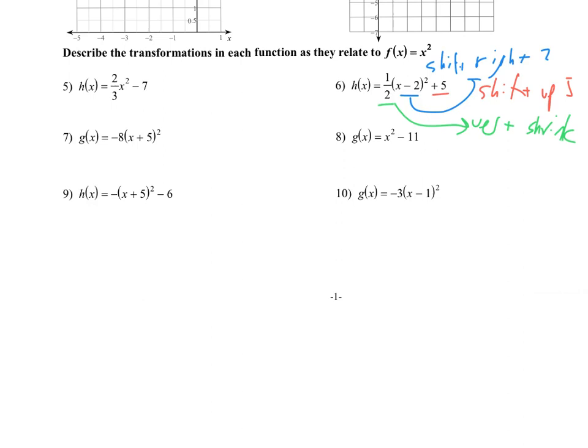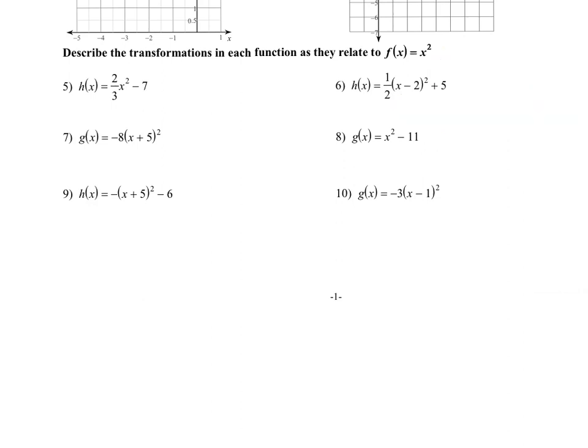Next, number 8. This one really only has the minus 11 out back compared to the original x squared. So this is going to shift it down by 11. It's not in parentheses, so it's not left or right. When it's up or down: if it's minus, it's down; if it's plus, it's up.